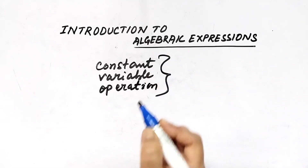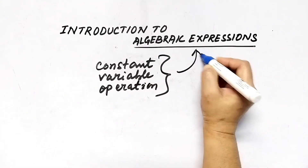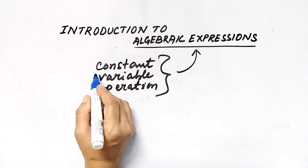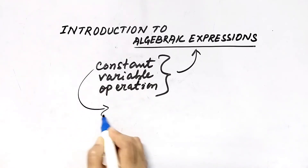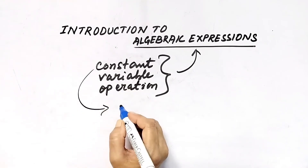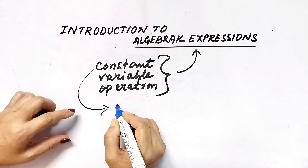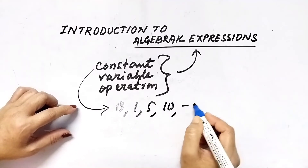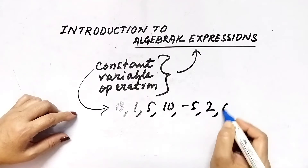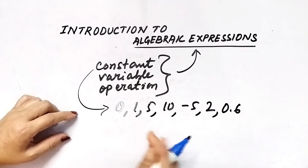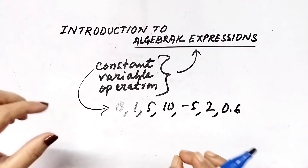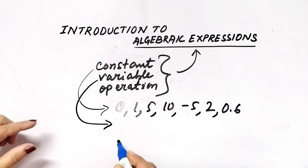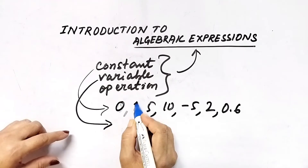These three together form one algebraic expression. Now let us discuss what we mean by a constant. A constant means a symbol to which we assign one particular numerical value — such as 0, 1, 5, 10, minus 5, 2, 0.6, or any fixed numerical value. That fixed quantity value is called a constant.